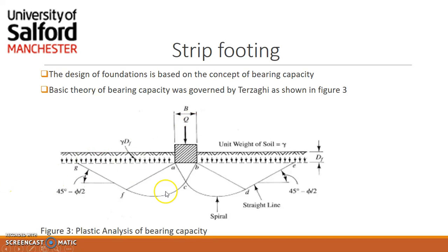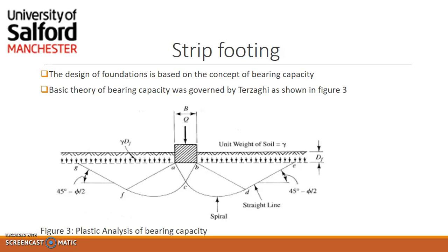The slip surface is shown by curves EDC and CFG. The set of slip surfaces gives the least applied load Q — these slip surfaces EDC and CFG give us the least applied load, which is the most critical, hence giving us the ultimate bearing capacity, which is equal to the least applied load divided by the footing area. This is a brief representation of how bearing capacity works.